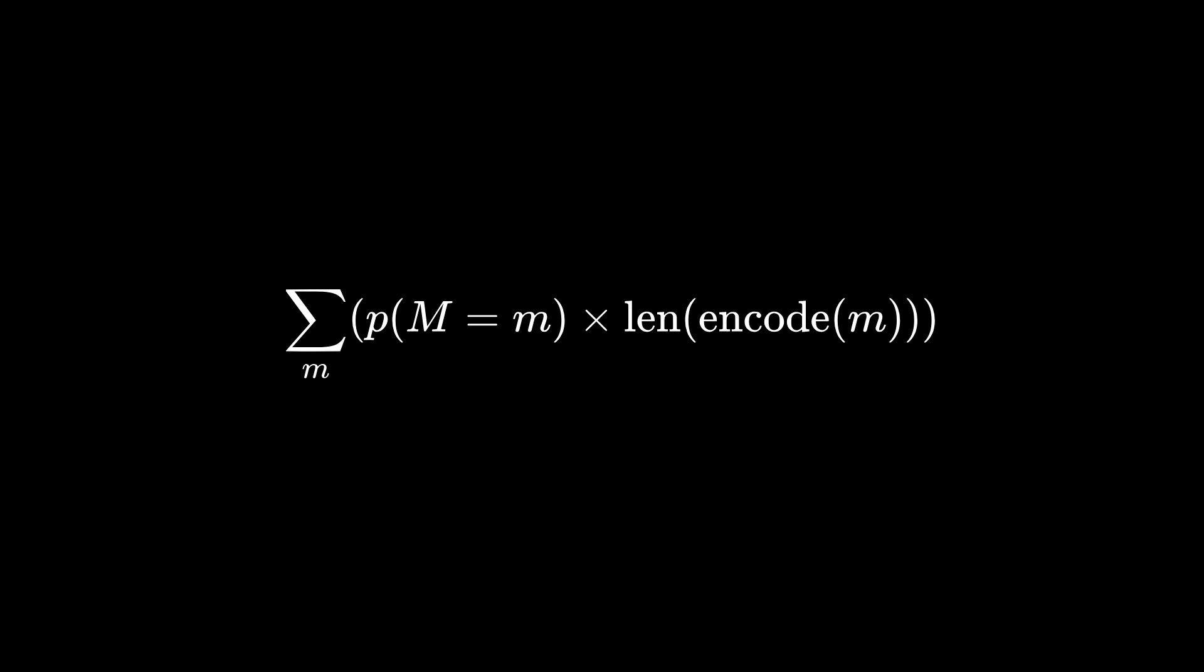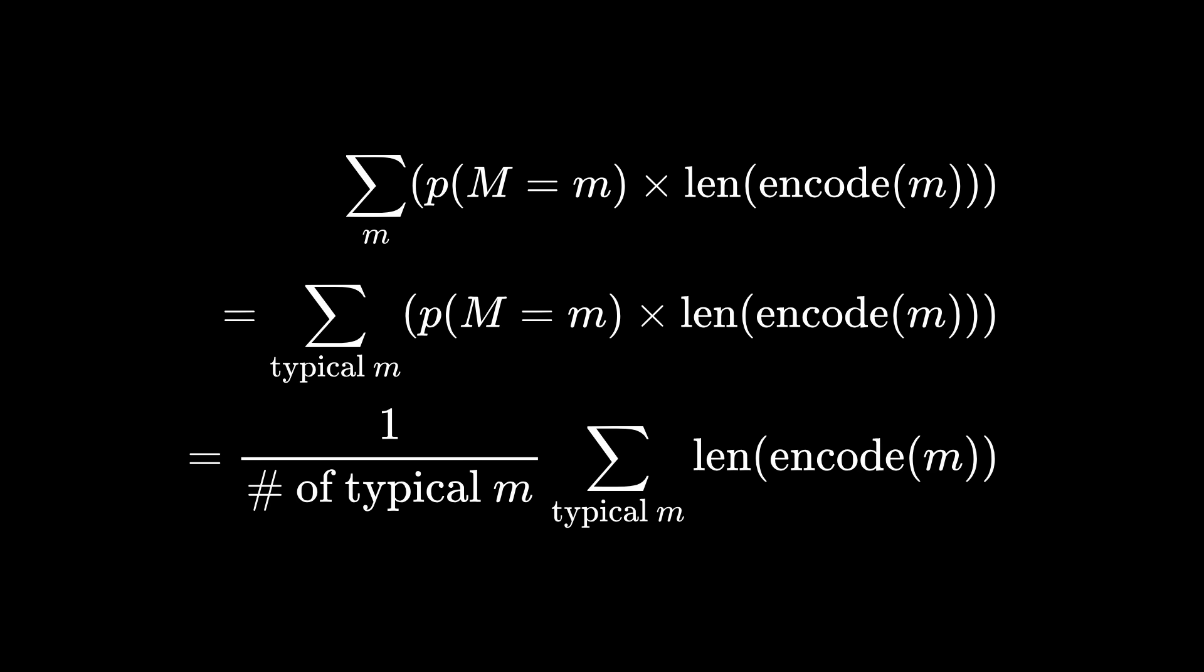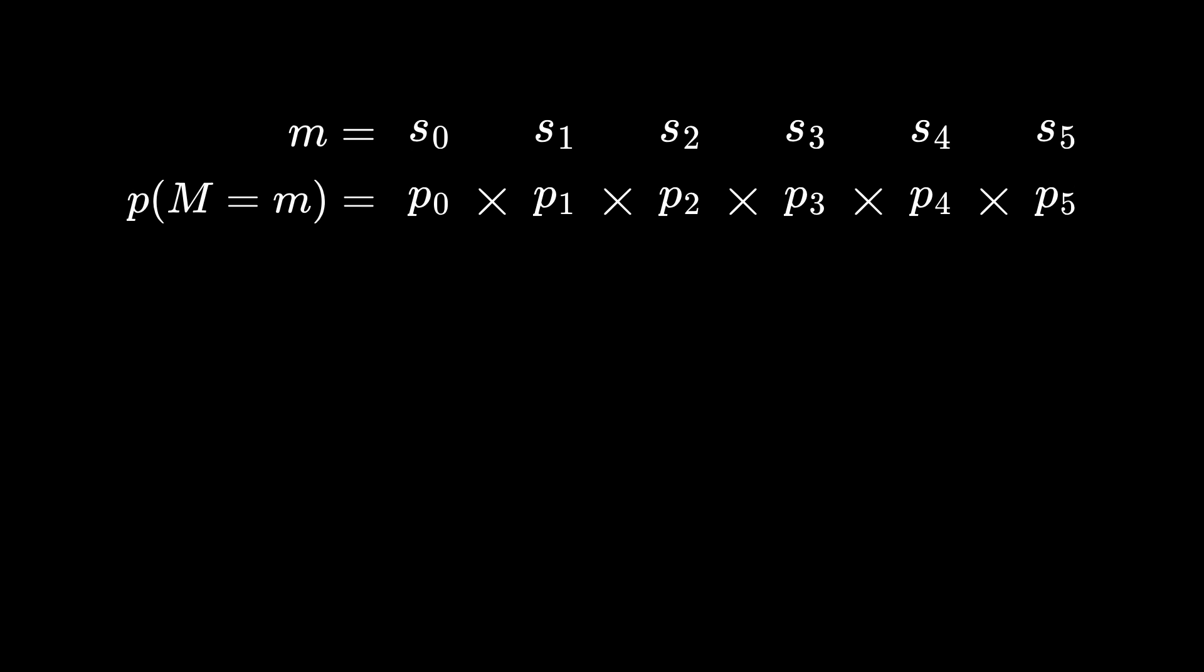But the basic idea is that we can now just find the minimum average code length of a typical message instead of any message, to at least get a lower bound on average code length. This is nice because you have the same probability of seeing any typical message, so the expected code length is just the average code length. Because the symbols are independent, the probability of a message is just the product of the probabilities of its n symbols. So if a message has 3 a's, 2 b's, and 1 c, the probability of that message is the probability of a raised to the third power times the probability of b squared times the probability of c.